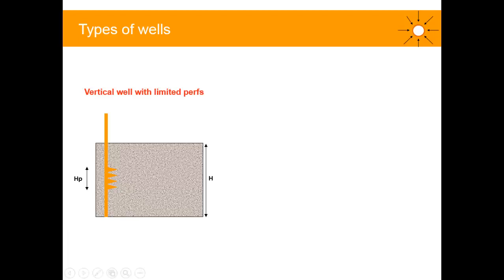We have a layer with height equal to h, which is the net reservoir thickness. We define a penetration ratio which is HP over h.